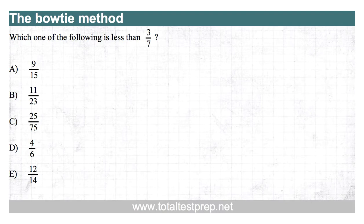We're asked which one of the following, meaning these answer choices, is less than three-sevenths? In other words, we're asked to compare these fractions to see which one's bigger. And there is a shortcut that you can use for those types of questions. It's called the bowtie method.